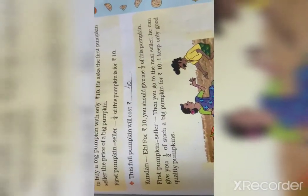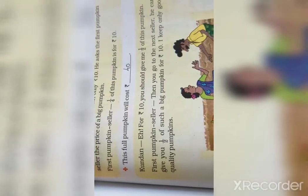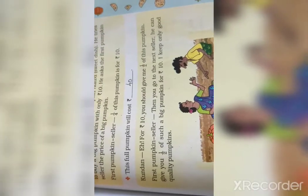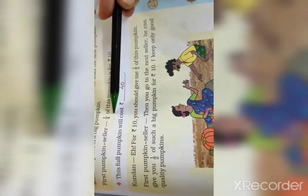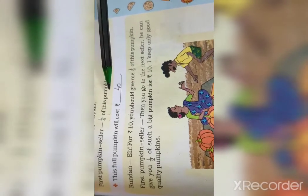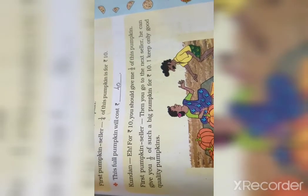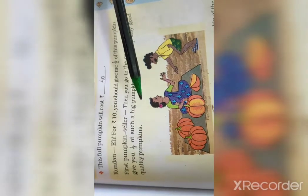Kundan says: 'For rupees 10 you should give me half of this pumpkin.' The first pumpkin seller says she will give one-fourth part for rupees 10, but Kundan is asking for half — that means two out of four parts — for the same rupees 10.